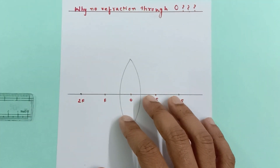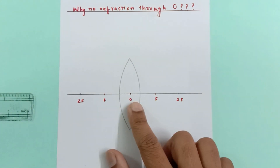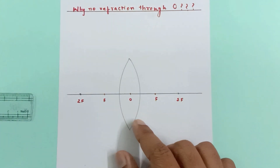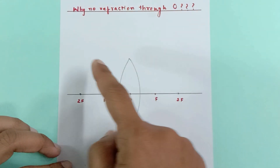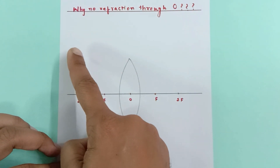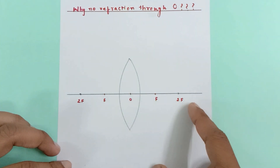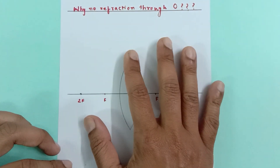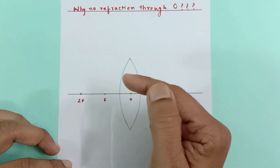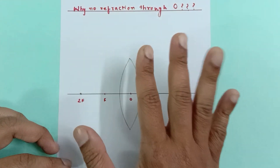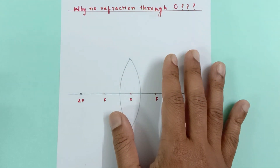Today I'm going to discuss a very important question about lenses — whether concave or convex — specifically why does the ray passing through O not suffer any refraction. The answer to this premise is that it is not true. All rays which pass through the lens have to undergo refraction. Please continue watching to know the complete answer.